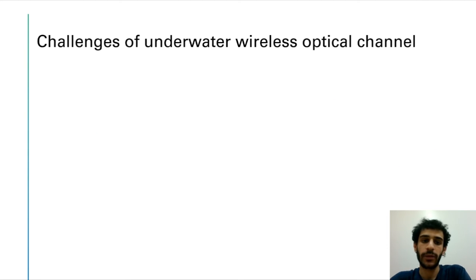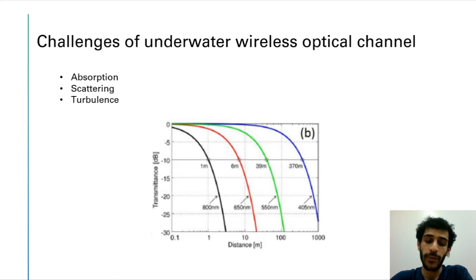So just like in wireless electric communication we have several challenges. And in the optical case they are absorption, scattering and turbulence. In this graph we have on the y-axis the transmittance which is received over the transmitted optical power plotted against distance for different wavelengths. So we see that as the distance increases the received power decreases, and we can also see that the lower the wavelength or the higher the frequency the better performance that we're going to have with distance.